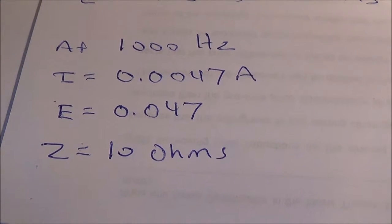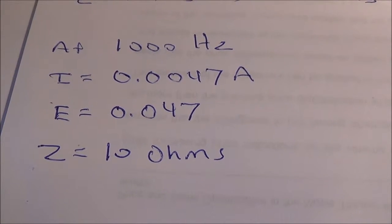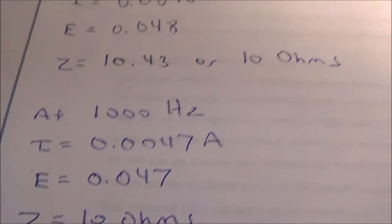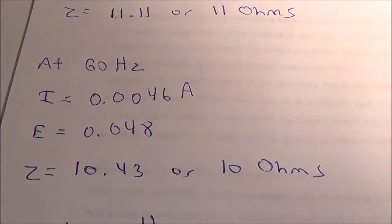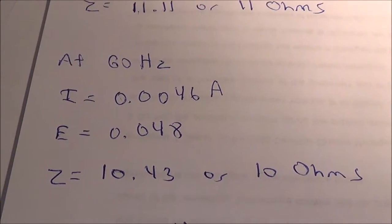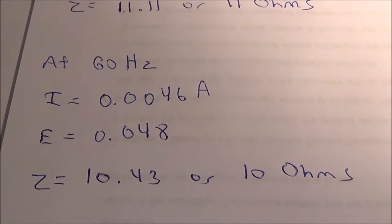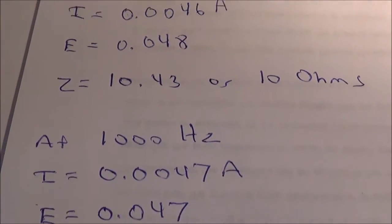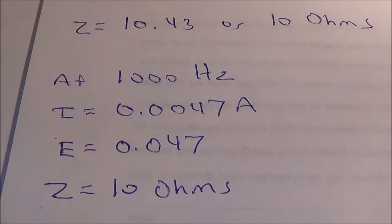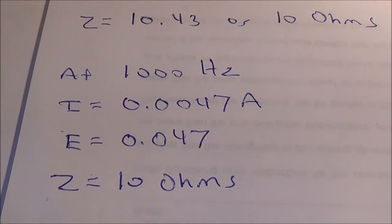For 1000 Hz I got exactly 10 ohms. You remember at 60 Hz I got 10.43 ohms - I said for practical purposes 10 ohms, but evidently the impedance is going down the higher the frequency. Now I'm going to try 5000 Hz.